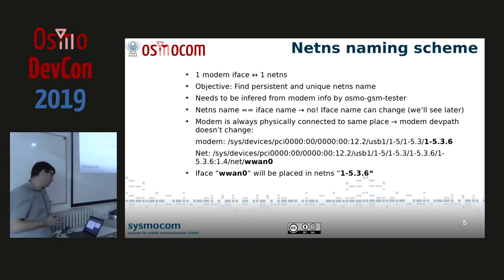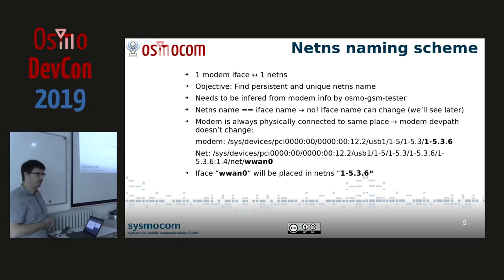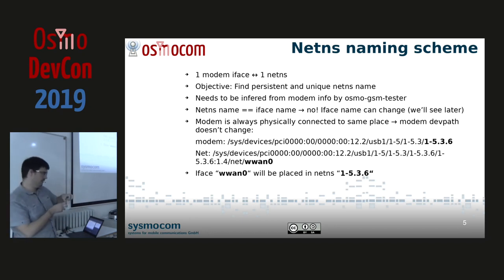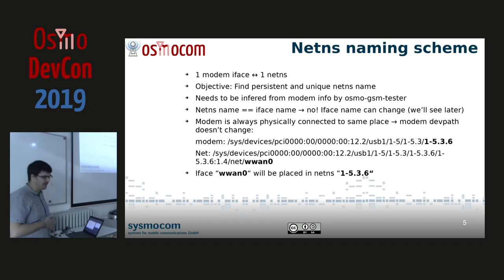We decided we want one network namespace per modem. The objective is to find a unique NetNamespace for each modem, because Osmosism Tester needs to be able to infer the network namespace for each modem — since we're managing modems, we need to know which network namespace to use to run the test. In Osmosism Tester, we identify modems by their system path: the dev path from udev, or the system path from /sys. This is necessary because Ofono doesn't provide persistent unique names for modems — modem names can change over time, so the only way to identify a modem is by using the system path property that Ofono also provides.